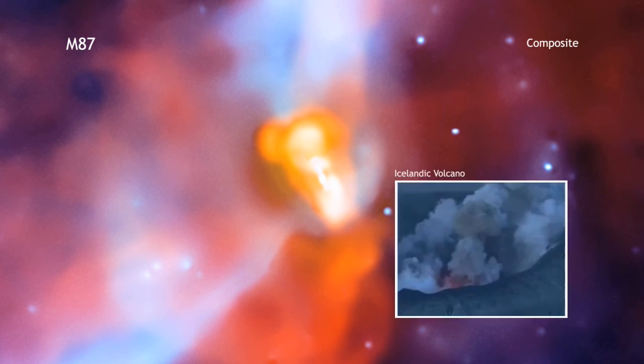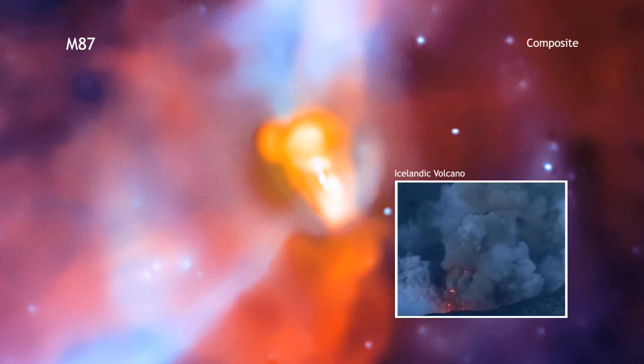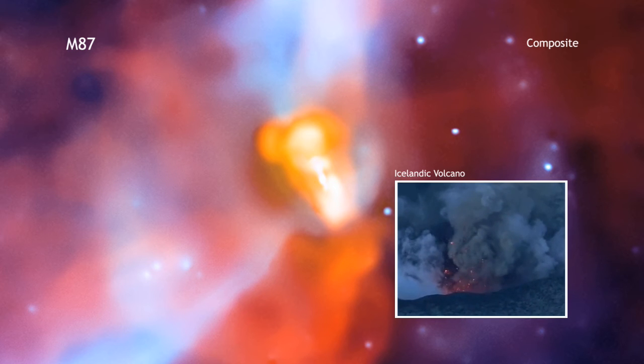The comparison between the black hole in M87 and the volcano in Iceland shows that even though astronomical phenomena occur in exotic settings and over huge scales, the physics can be very similar to events on Earth.